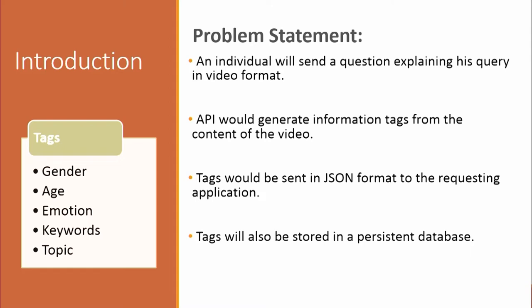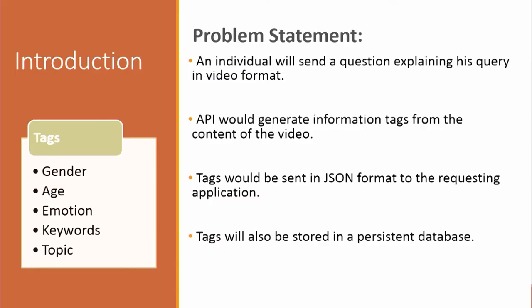The tags that we decided to extract from the video content were gender, age, emotions, keywords, and topic. Gender is relevant because it would be appropriate to ask the question to the same gender based on the questioner's comfort. Age would give an apparent idea of the knowledge of the individual seeking the answer. Emotion would help in identifying the real intent of the questioner. Keywords provide a condensed summary of the question, and topic helps map the question to the appropriate respondent. These tags generated by our API would be sent in JSON format to the requesting application and also stored in a persistent database.